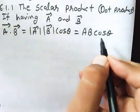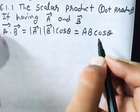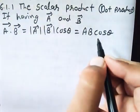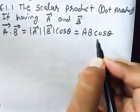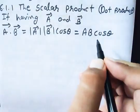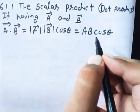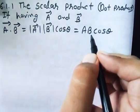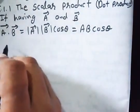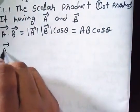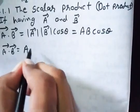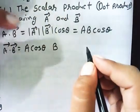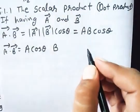But we can also write it another way. Vector A dot vector B equals A cos theta into B. This A cos theta into B is also correct. When is it correct?